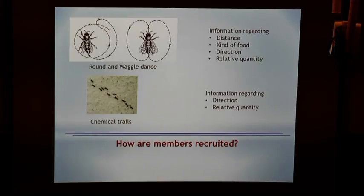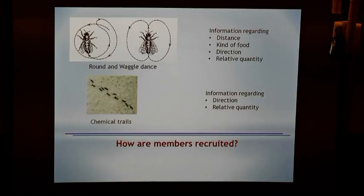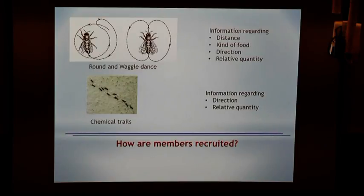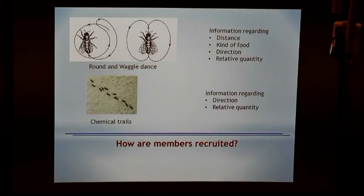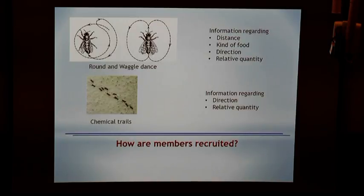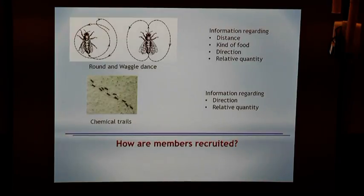Chemical trails laid by ants also have information about direction and relative quantity, because the more food there is, the stronger the trail. As you can imagine, honeybees will be flying, so finding their path in flight is a different cup of tea compared to following a chemical on the ground. This chemical trail is something all of us have seen; the waggle dance not so much, and it's really spectacular — people have been working on it for many years now and we think of this as a complete language altogether.